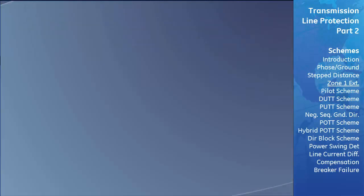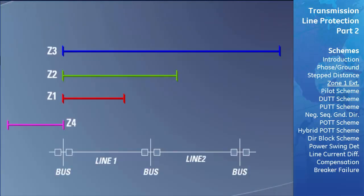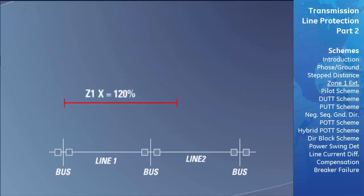The Zone 1 Extension Scheme, like the stepped distance scheme, has four zones of protection. The difference is that an additional Zone 1 impedance setting, labeled Z1X, is set higher to overreach into the next adjacent transmission line—usually set to 120% of the impedance of the entire line, the same as the Zone 2 setting. This extended Zone 1 is used by the distance relay until it detects a fault within its zone, at which point the relay immediately trips the transmission line with no delay, even if the fault is in the adjacent line's area.